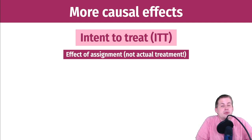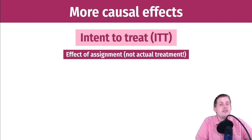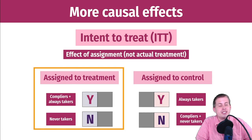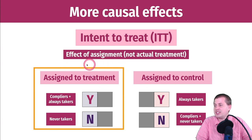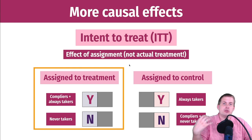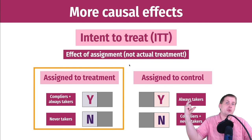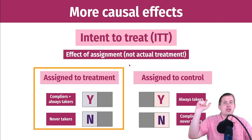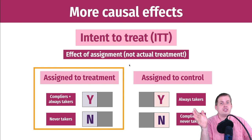We can calculate a couple of different causal effects given compliance. The first is the intent-to-treat effect — the effect of being assigned to treatment, not the effect of actually receiving treatment. This gets rid of the whole distinction between compliers, always takers, and never takers. You're just finding the effect of randomization to the treatment group versus the control group.